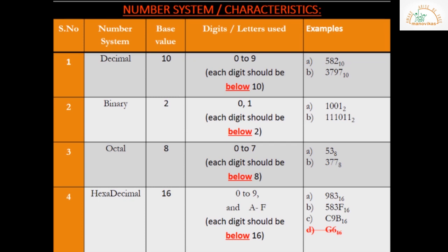Example: 983 base 16 — each digit satisfies the condition. Next example: 583F. According to the hexadecimal number system, this is a valid example because 5, 8, and 3 belong to the digits 0 to 9, and the last digit F is also part of the hexadecimal digit group. The base value is 16. The last example is C9B — C, 9, and B all belong to the hexadecimal digit group, with base 16.